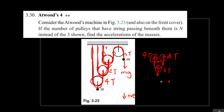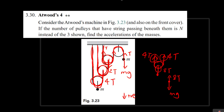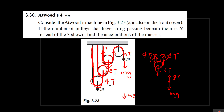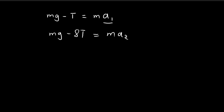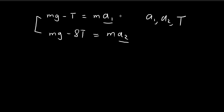For the bottom mass, there is a gravitational force mg pointing downwards and a tension of 8t pulling it upwards. So the second equation is: mg minus 8t equals m times a2, where a2 is the acceleration of this mass. We now want to find a1 and a2, but we have two equations and three unknowns — a1, a2, and t. We need a third equation, which requires establishing a relationship between a1 and a2.